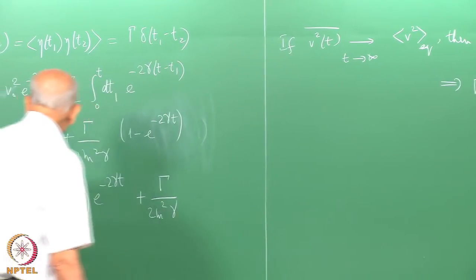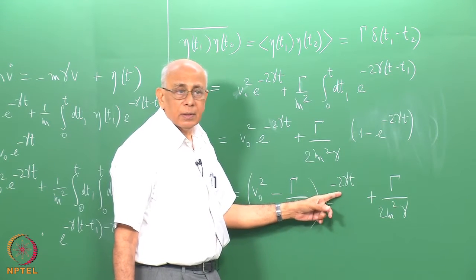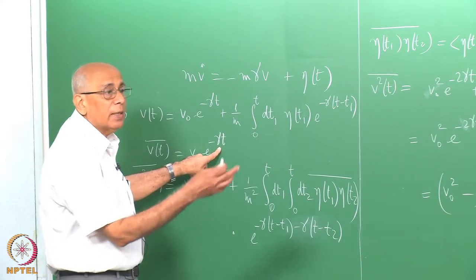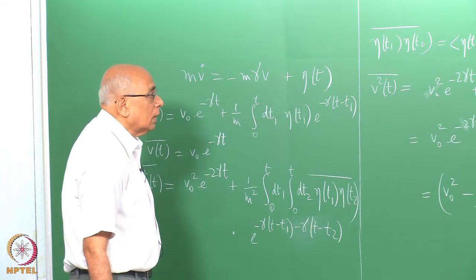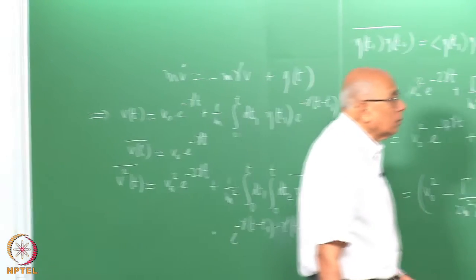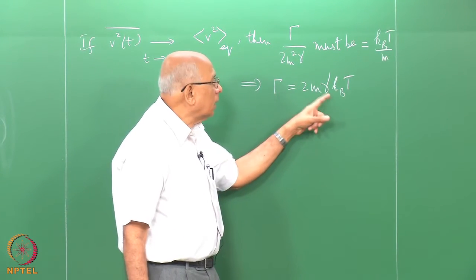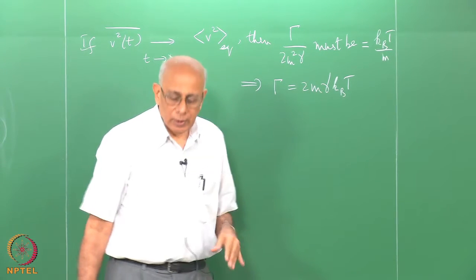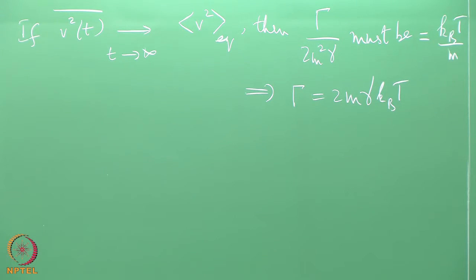You can see that v-squared of t relaxes with time constant gamma-inverse to whatever value it attains in equilibrium. There is a relation between the fluctuations on the one hand and the relaxation or dissipation on the other, and this is called a fluctuation-dissipation relationship — the simplest of such relationships. We will come across several more.